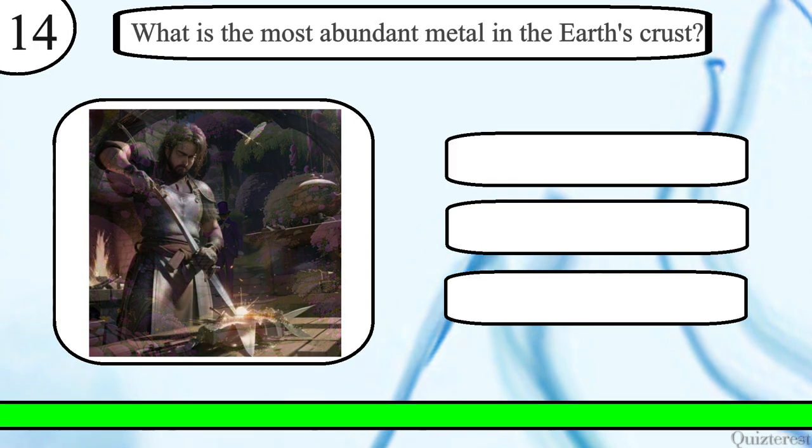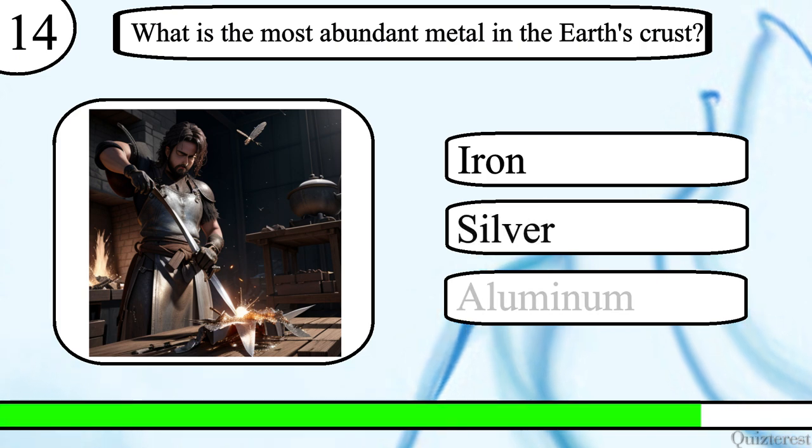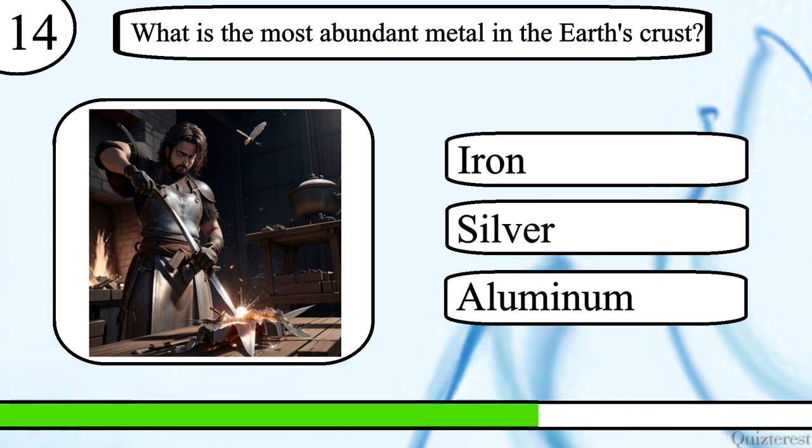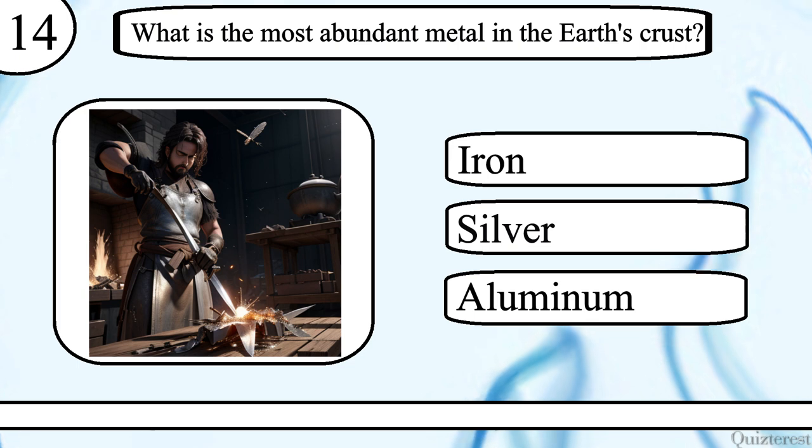Question 14. What is the most abundant metal in the earth's crust? Iron, silver or aluminum? The correct answer is aluminum.